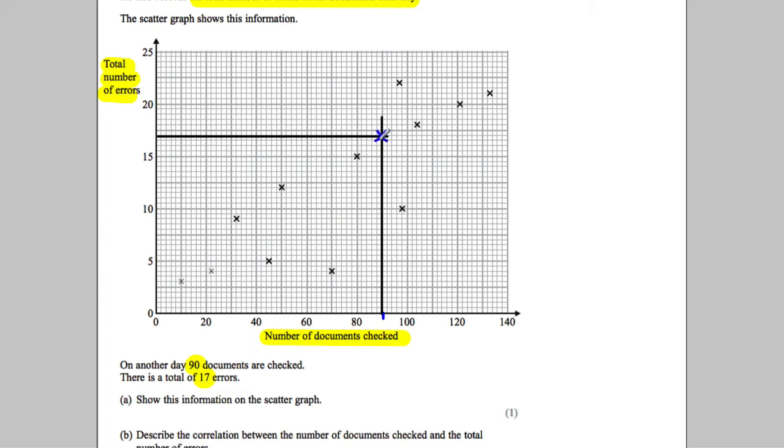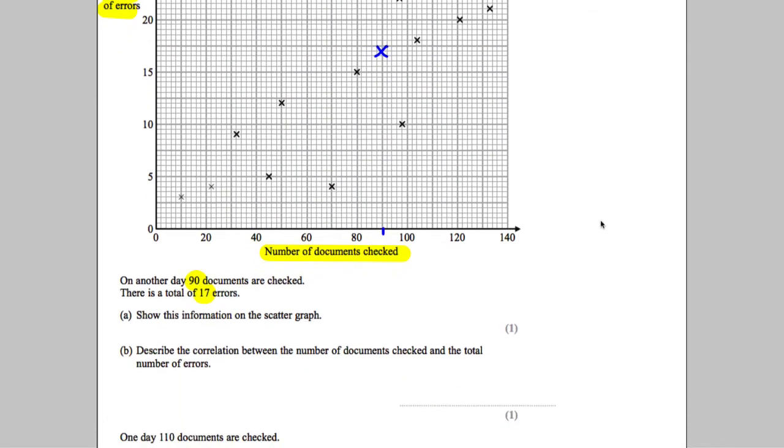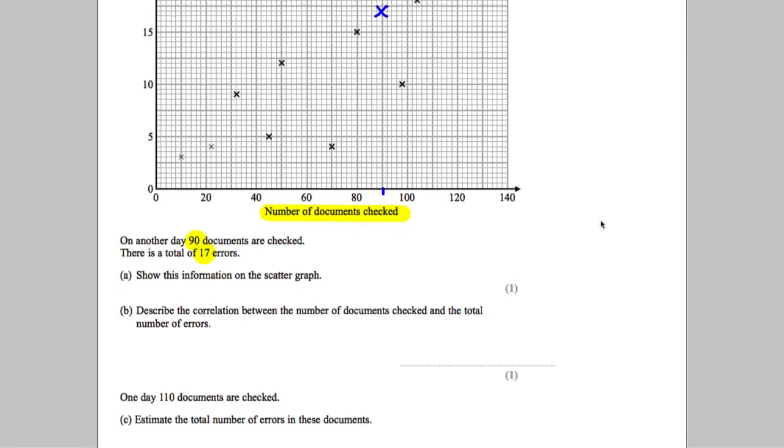So you would mark that in with a cross. Use your ruler to do that. Probably don't bother drawing ruled lines and you would mark in like that. Describe the correlation between the number of documents checked and the total number of errors.